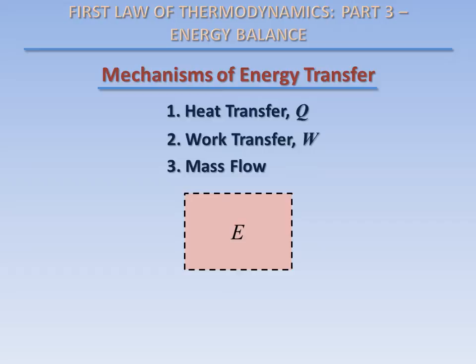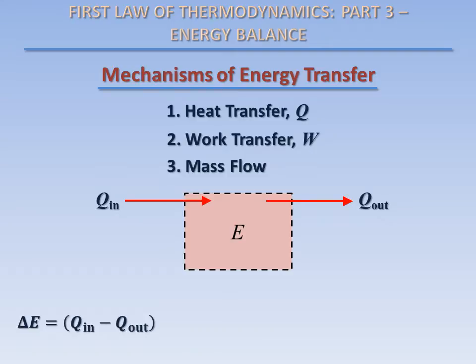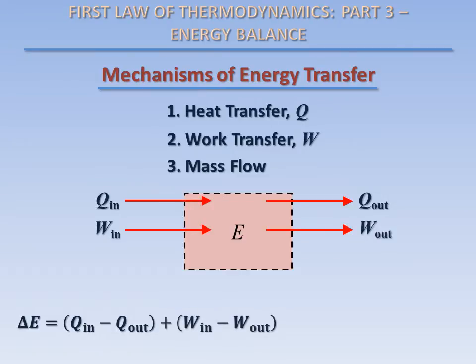Recall that our goal is to create a mathematical expression for the first law of thermodynamics, or conservation of energy. We can write an equation which represents the change in the total energy of the system during a process by accounting for all of the energy transferred into and out of the system. The total change in energy of the system during a process, delta E, is equal to the total amount of energy transferred into the system by heat minus the total amount of energy transferred out of the system by heat, plus all of the energy transferred into the system by work minus all of the energy transferred out of the system by work, plus all of the energy contained in the mass that enters the system minus all of the energy contained in the mass that leaves the system.